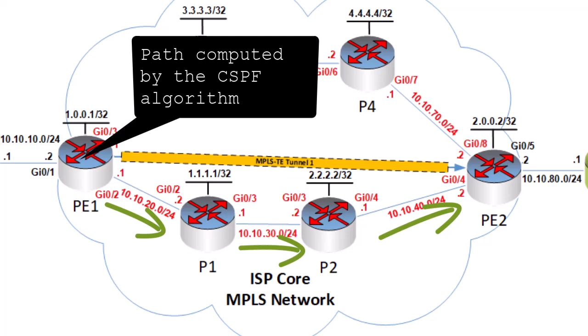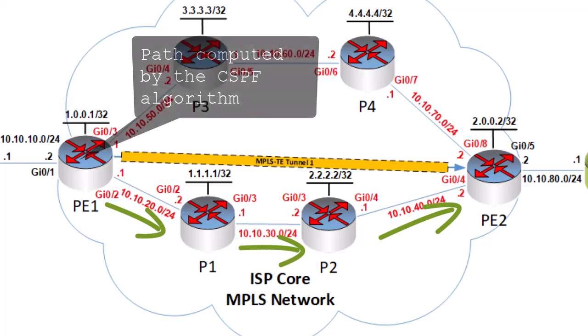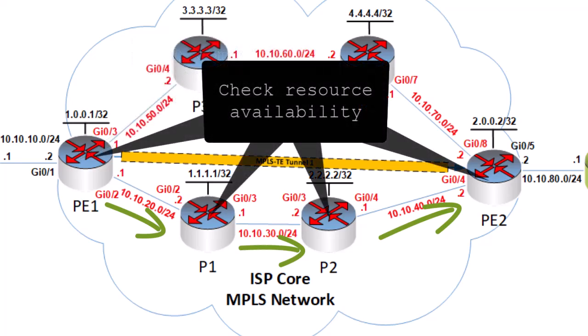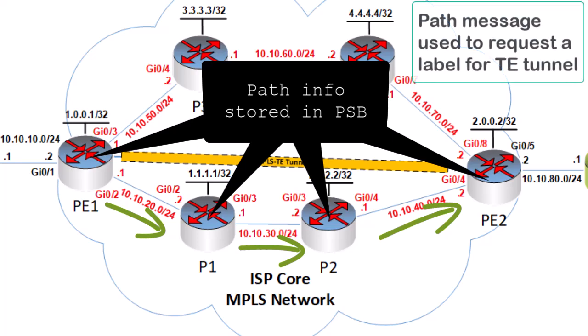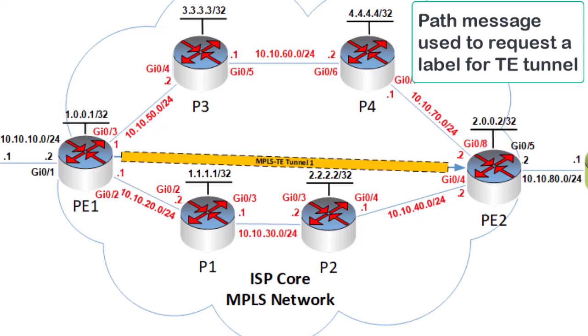Each router along the path — and indeed each interface that has been configured with RSVP along the path — will receive this message and will check availability of the requested resources. In addition, this path message is used to request an MPLS label for the TE tunnel we want to establish.